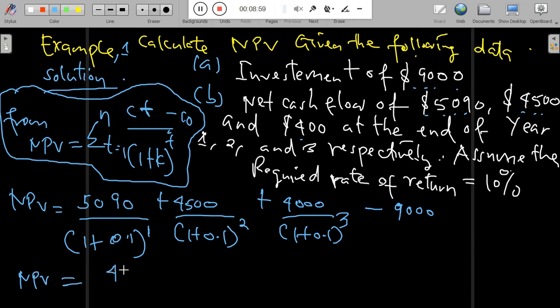The net present value will be $4,627 plus $3,719 plus $3,005 minus $9,000, that is the initial investment outlay. The answer will be $2,351.